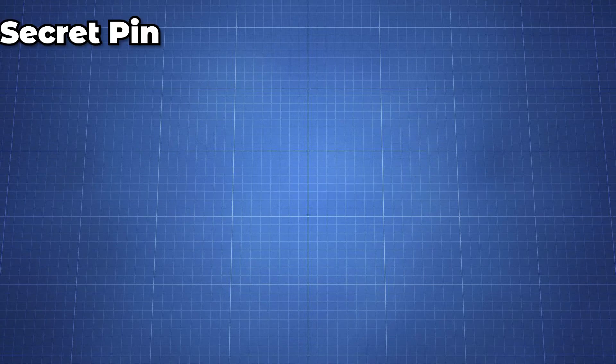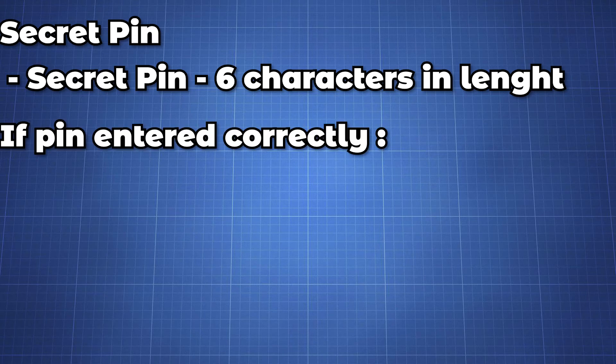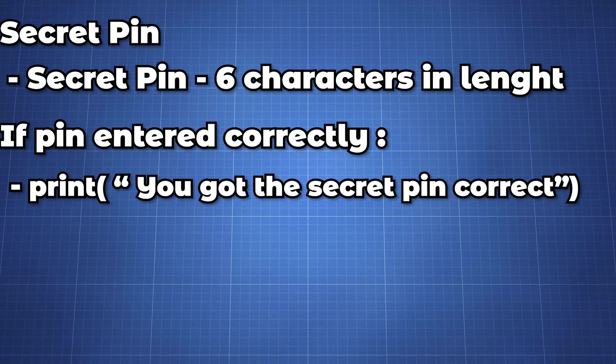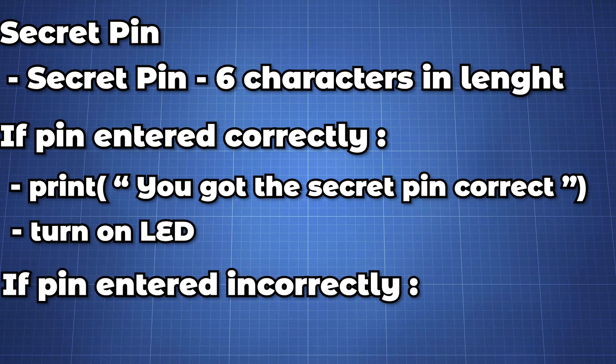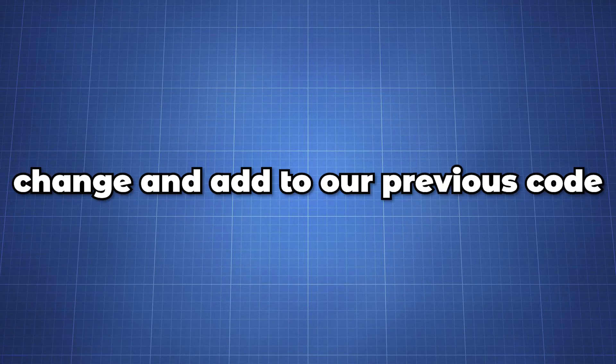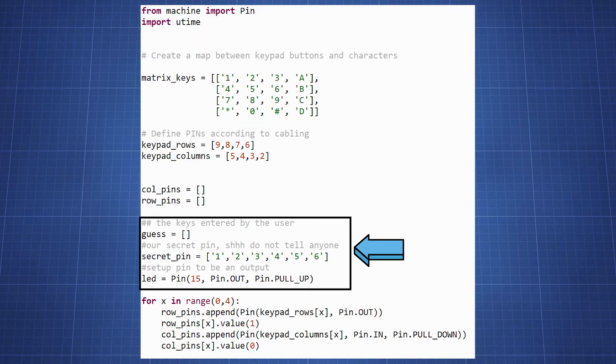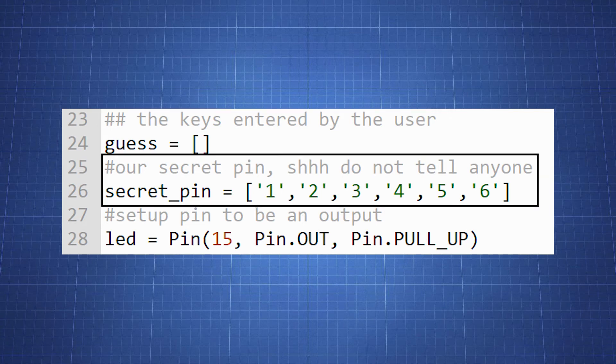Let's say we have a secret pin that is six characters long. And if you enter the pin correctly we'll print out to the user you got a secret pin correct and an LED will turn on. Enter the secret pin incorrectly we'll print out to the user better luck next time. Let's look at what do we need to change and add to our previous code. In this part here we create an empty list called guess. This will allow us to store the input from the user. Then we will create a list with our secret pin which is very easy now. Just one two six.